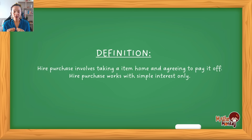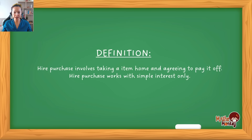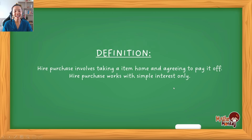Hire purchase involves the whole process of taking something home, paying it off, and then owning it after everything has been paid off. This specific section — hire purchase — includes simple interest, so there's no compound interest. If you're not sure how simple interest works, I have a video on simple interest and compound interest you can look at. Now, this topic can be asked in many different ways, so I'm going to show you the entire process, and depending on where in a test or exam they ask a question, you'll just stop at that specific point.